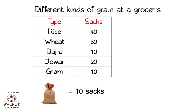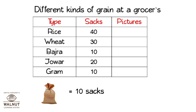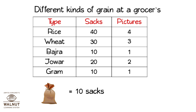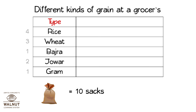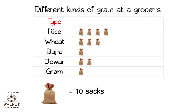Let us decide how many pictures we need to draw for each. We know we have to divide each entry by 10. We do that for each entry and get the number of pictures. We are now ready to put the pictures in and make it a proper pictograph. We make space for the images, then go on putting the images for each grain. After it's done, we erase the numbers we had written to the left, and the pictograph is ready.